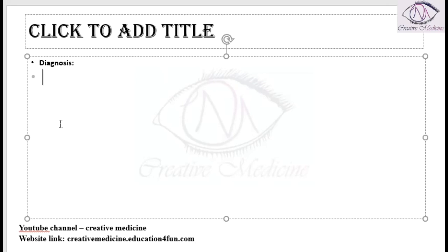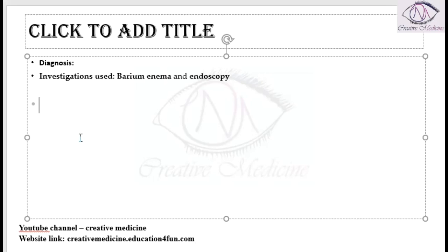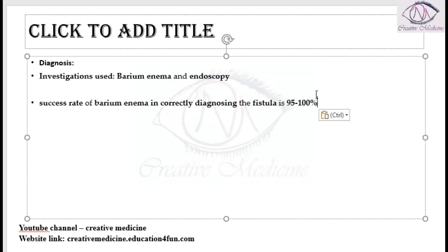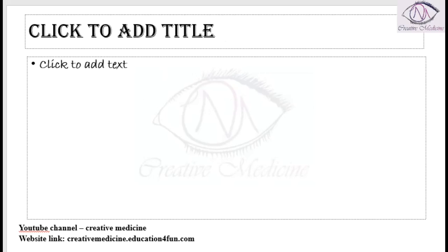Regarding diagnosis of gastrojejunocolic fistula: it is diagnosed mainly by barium enema. The investigation of choice is barium enema along with endoscopy. Barium enema can diagnose the fistula in around 95 to 100 percent of cases.